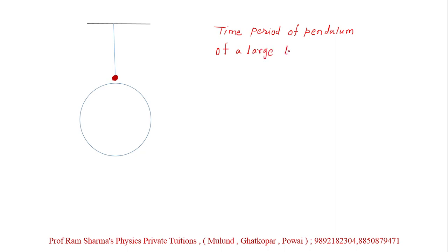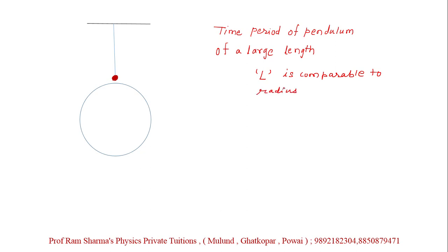When we say a pendulum of a very large length, it's very simple — it means the length L of the pendulum is comparable to the radius of the Earth. So the length of the pendulum is really large, comparable to the radius of the Earth. Now, how would this derivation be different from that for an ordinary pendulum?